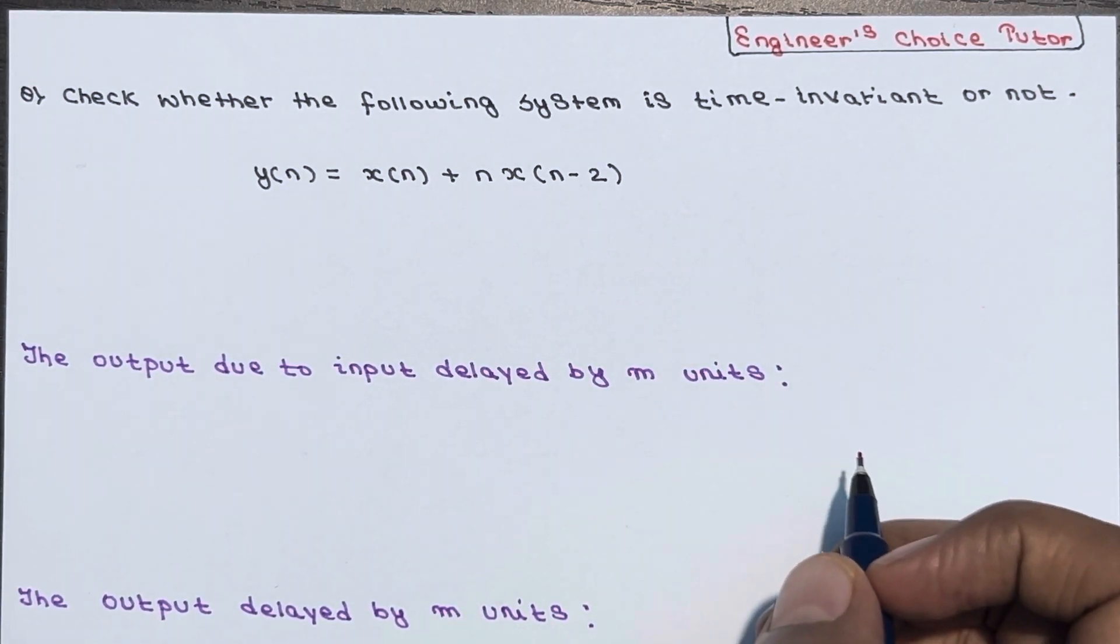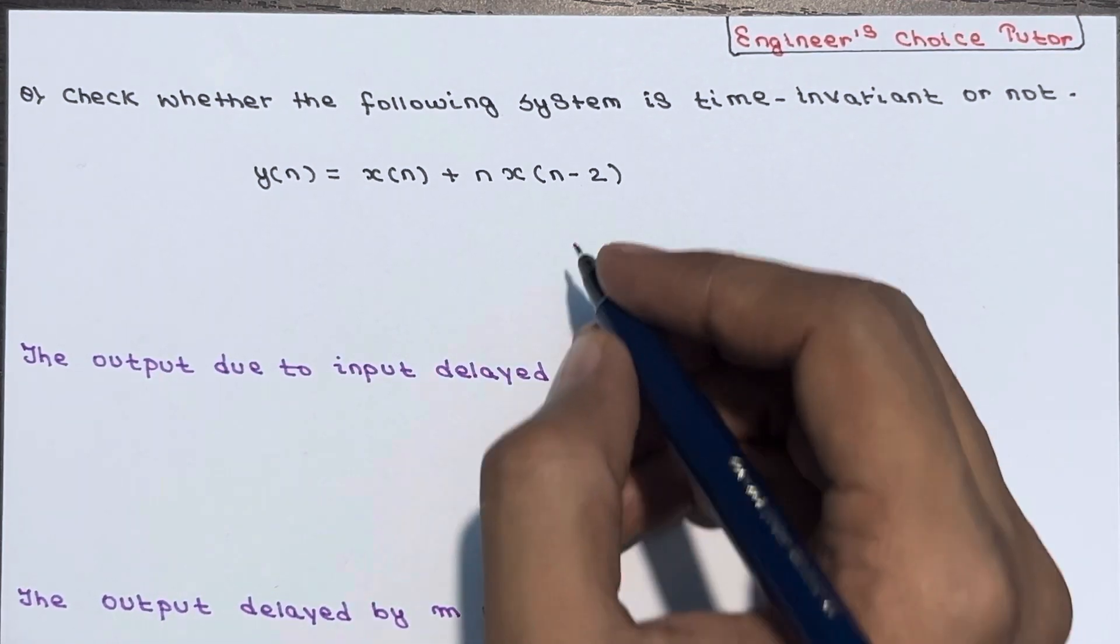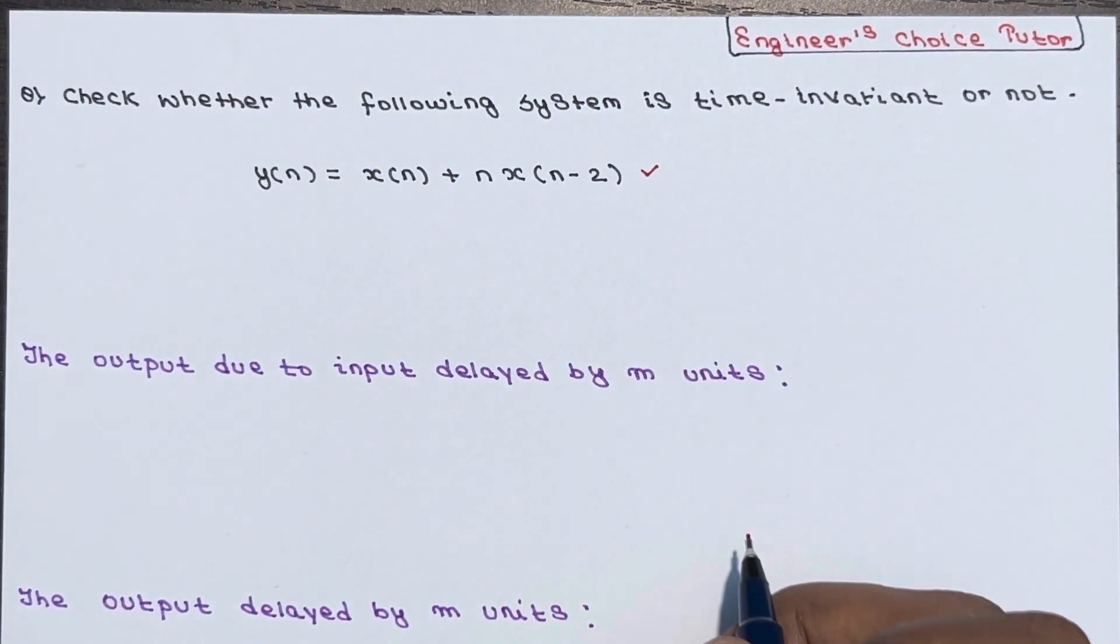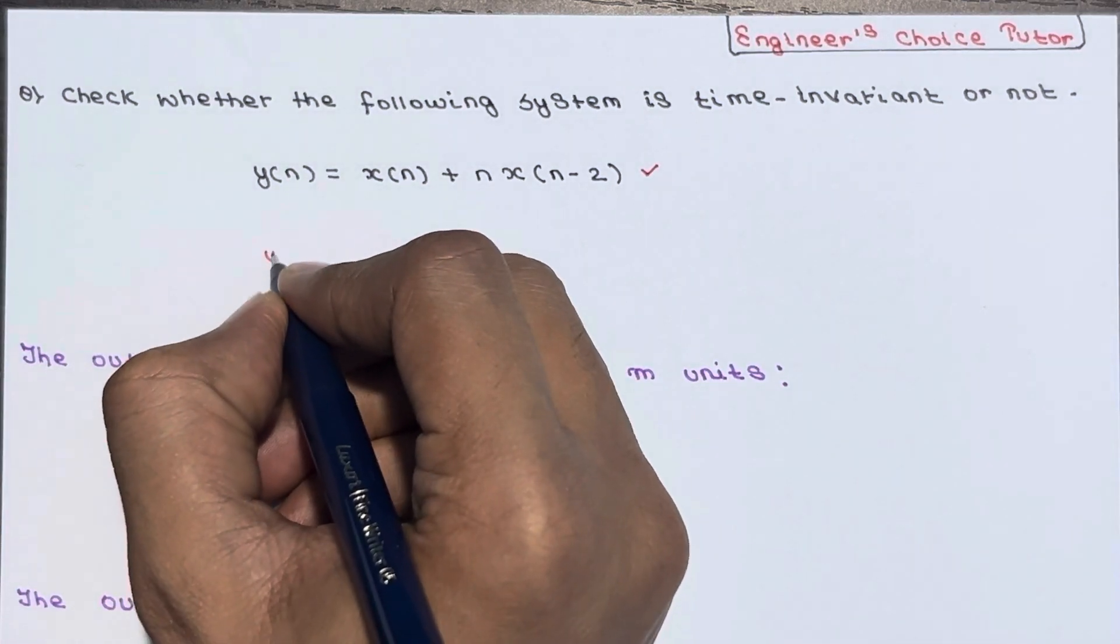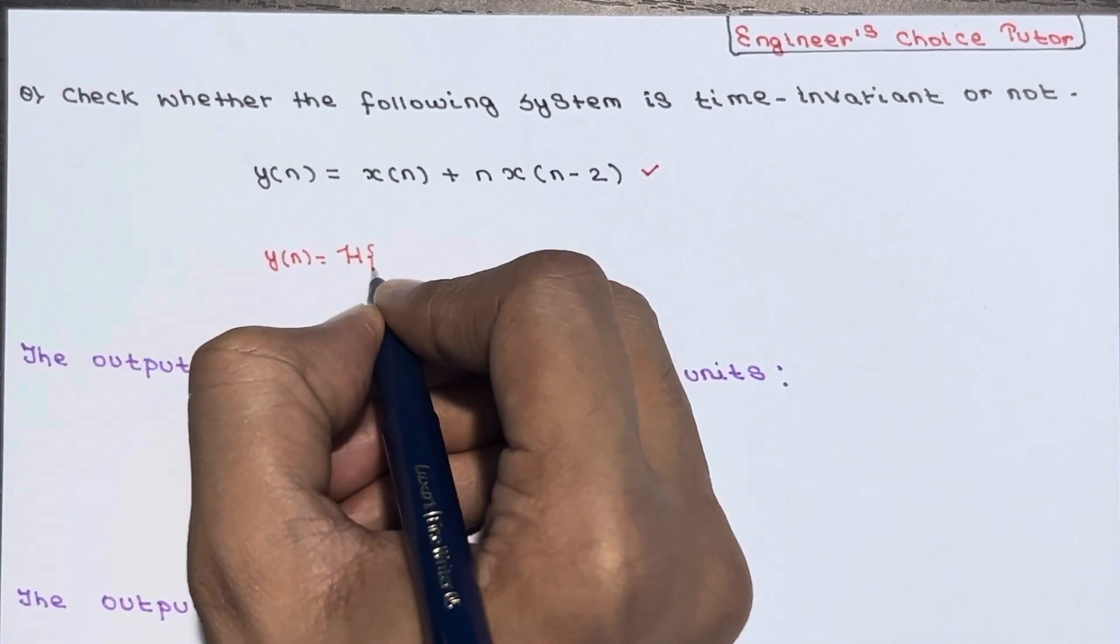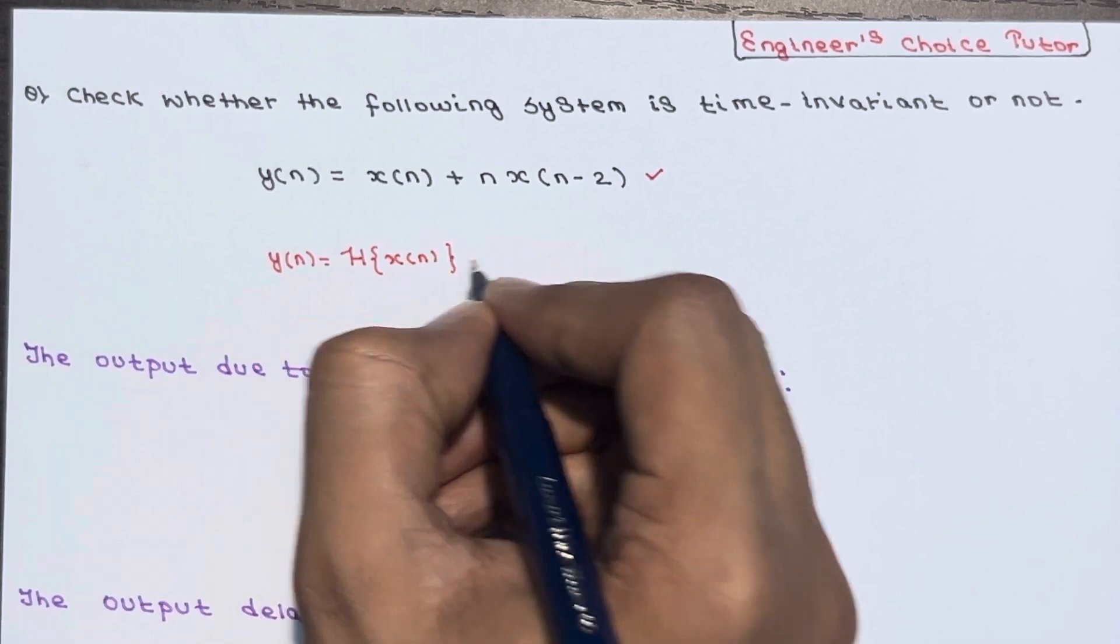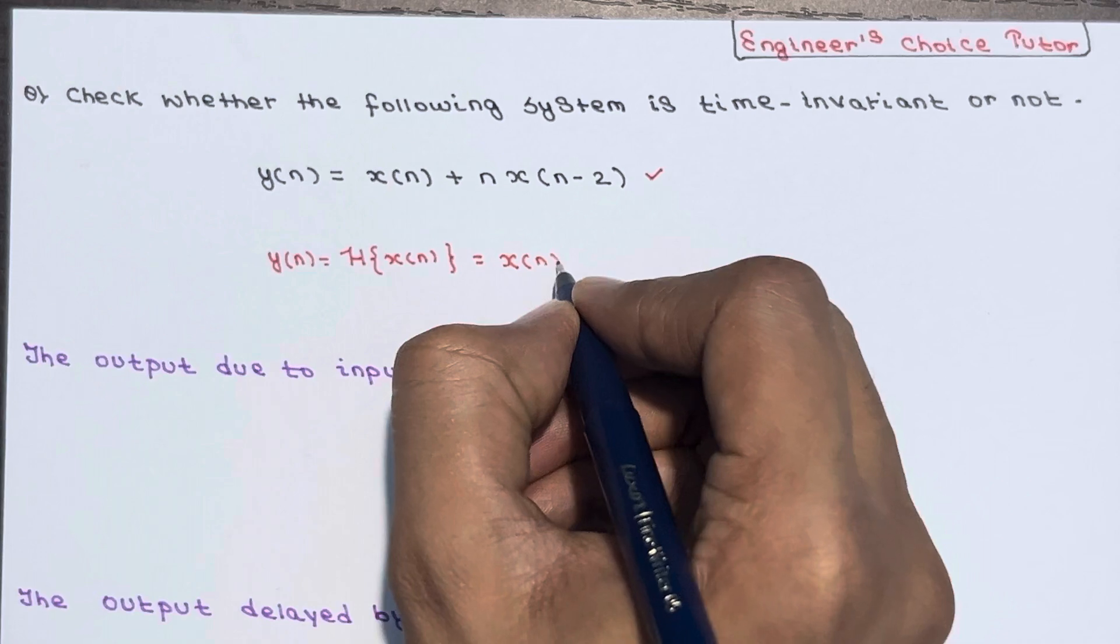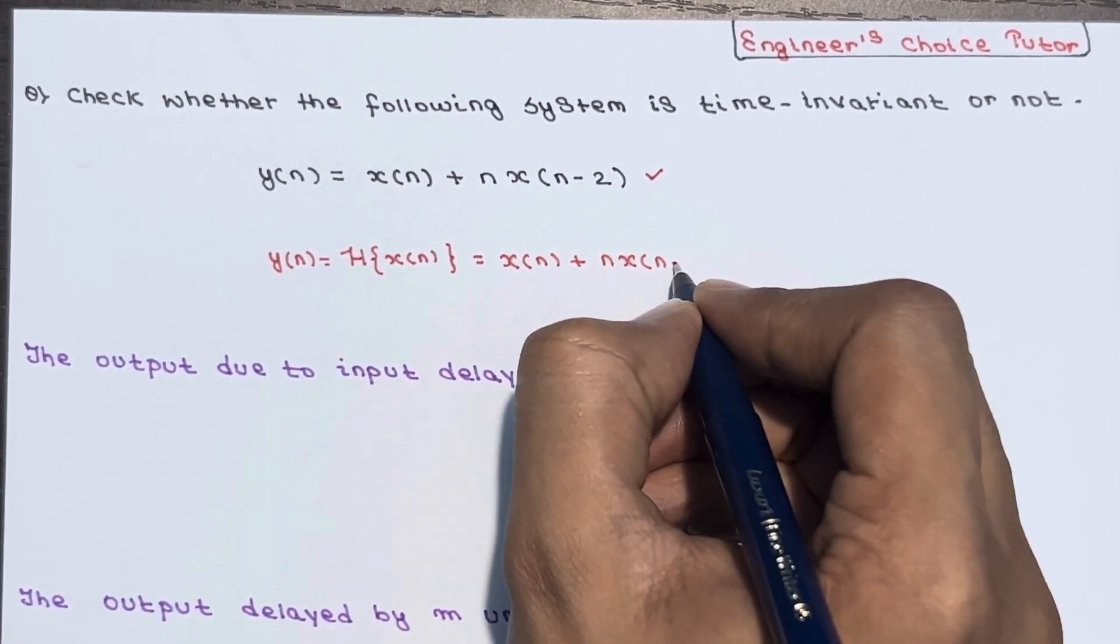The system equation will be given as y(n) = x(n) + n*x(n-2). So now, we already know that y(n) is basically the transform of x(n). And from here y(n) is equal to x(n) + n*x(n-2).